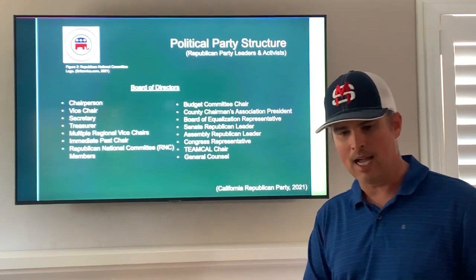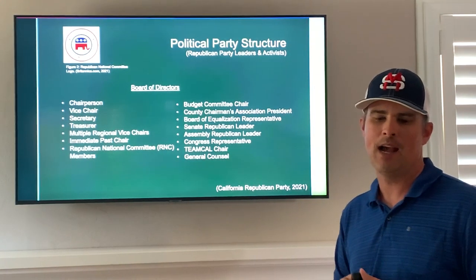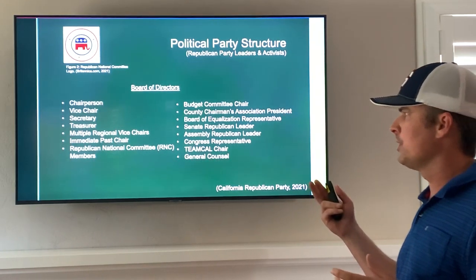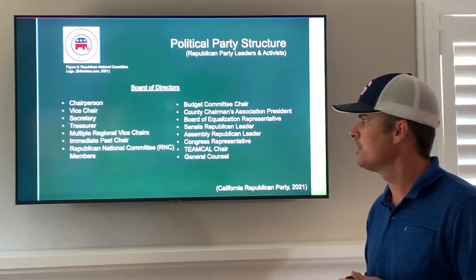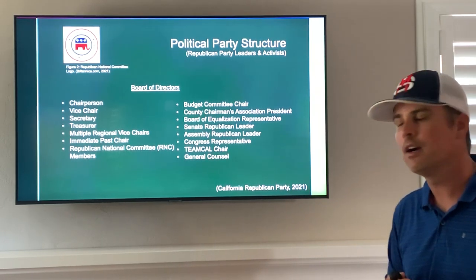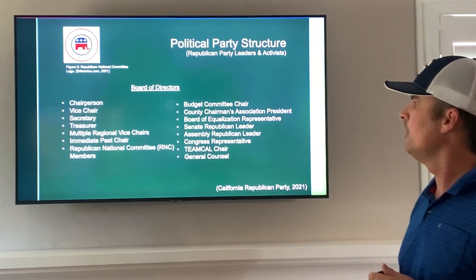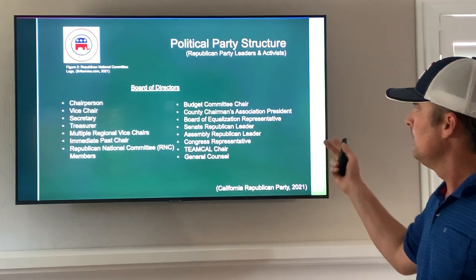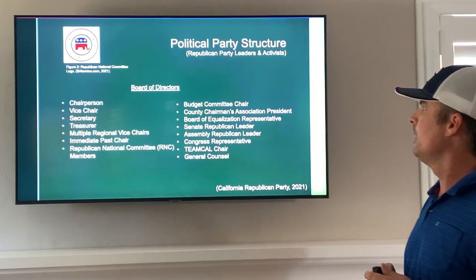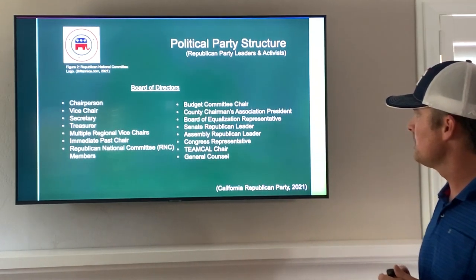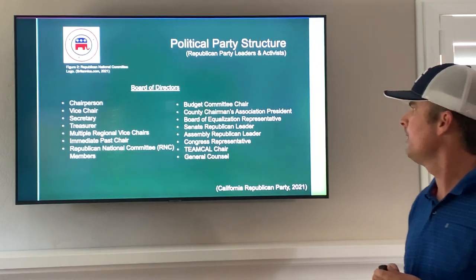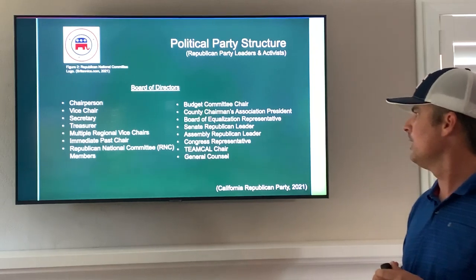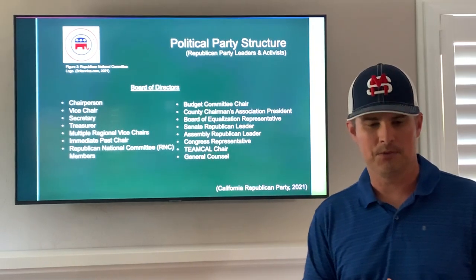On the Republican side, Republican leaders and activists are organized into a board of directors, and that includes the chairperson, vice chair, secretary, treasurer, multiple regional vice chairs, immediate past chair, Republican National Committee members, Budget Committee Chair, County Chairman's Association President, Board of Equalization Representative, the Senate, Assembly, and Congress representatives, Team Cal chair, and general counsel.